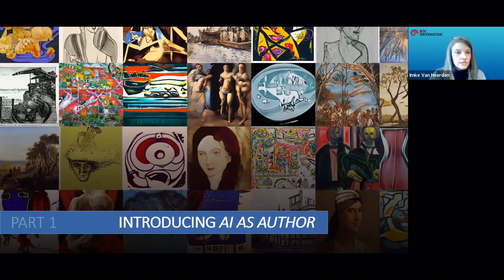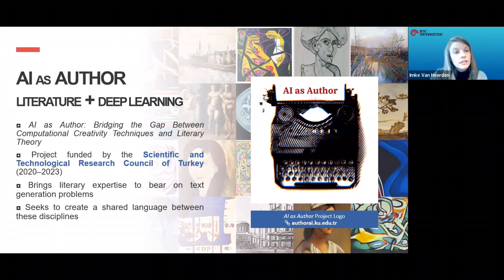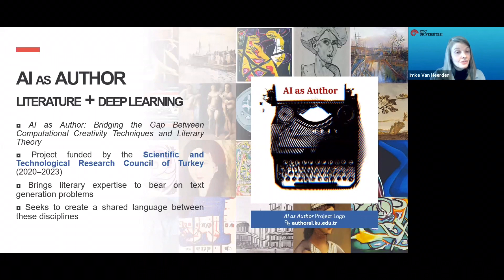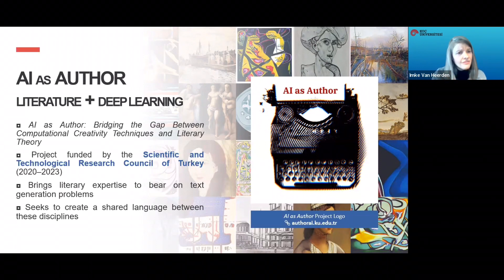Let's begin by briefly introducing AI as Author. It is my three-year interdisciplinary research project, funded by the Turkish Scientific and Technological Research Council. I lead a small team at Koç University in Istanbul, and our goal is to bring into conversation two seemingly unrelated fields — literature and machine learning — on the subject of AI-generated text. We try to identify and bring potentially useful ideas from literary studies to bear on creative AI. AFRIKI, our work in Afrikaans poetry generation, is just a small part of this larger project. Please visit the website authorai.ku.edu to learn more.